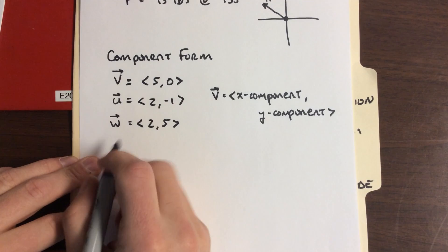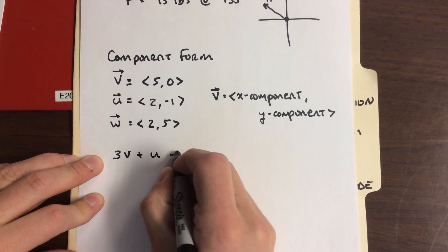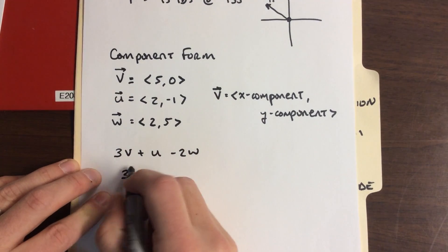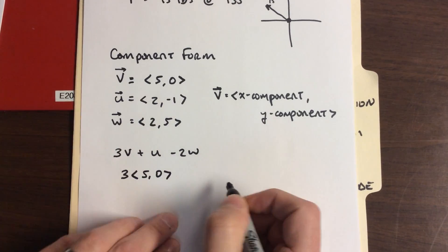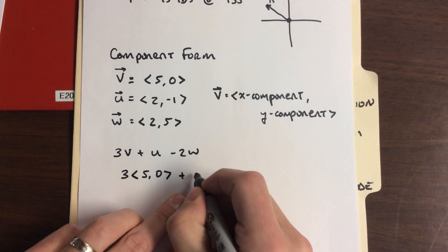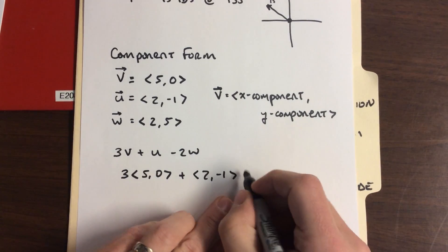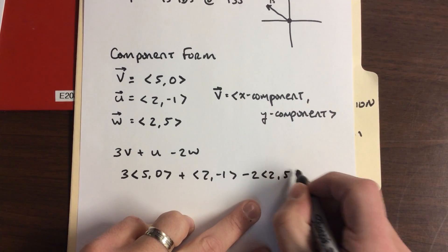So that last one, we had 3v plus u minus 2w. What we are doing is we've got 3 times vector v <5, 0>. We are adding to that vector u <2, -1>. We are adding to that, or subtracting, minus 2 times vector w <2, 5>.